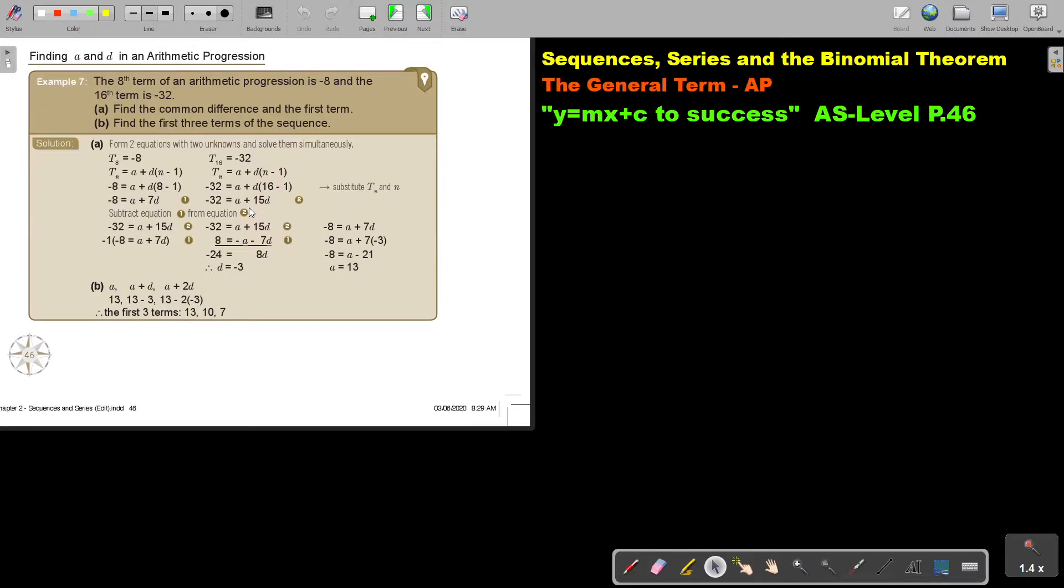With that negative 32 and the 16th term, you form the second. And then you just solve them simultaneously. And then find the common difference in the first term.